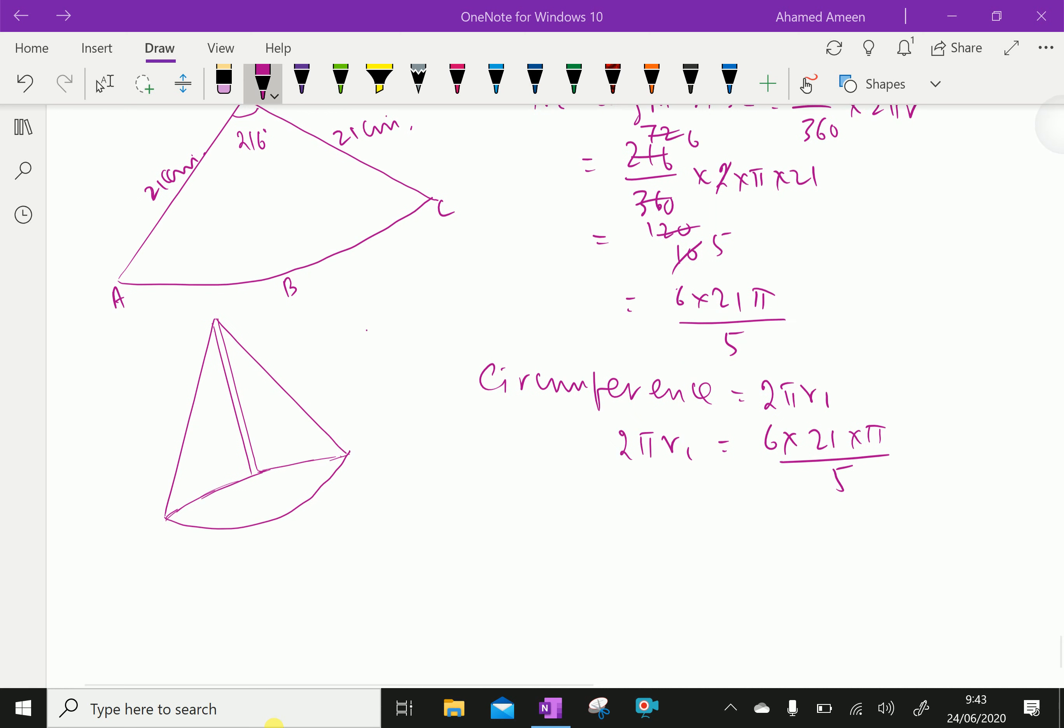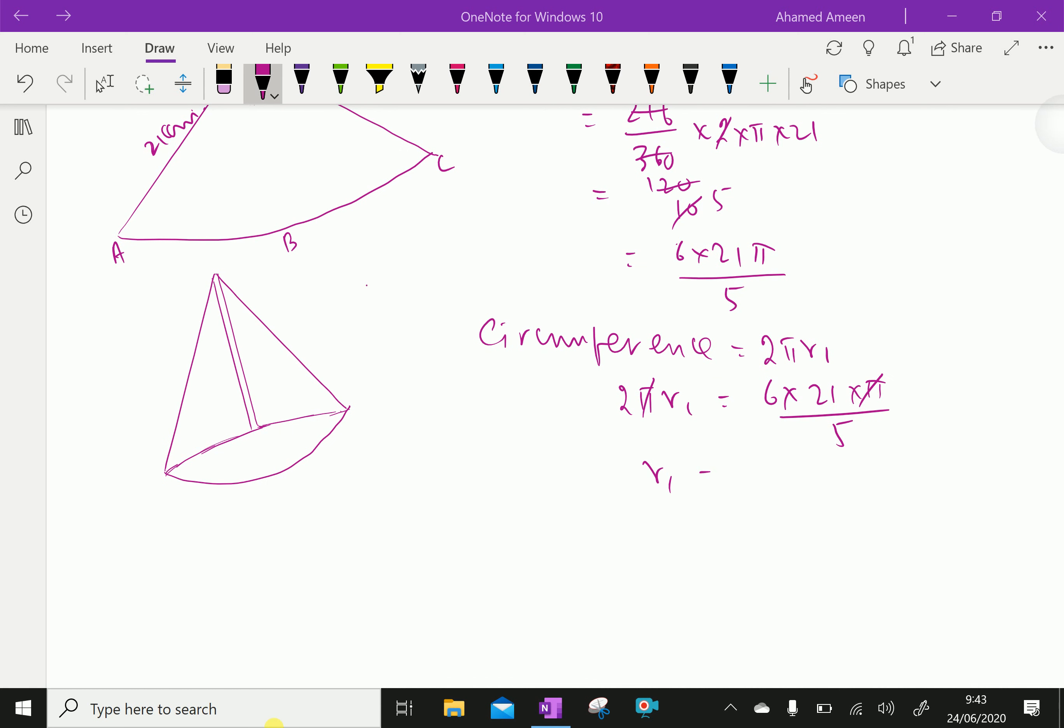Pi pi cut. So, we have r1 equal to 6 into 21 over 10. 6 into 21 is 126 over 10, which is equal to 12.6 cm.